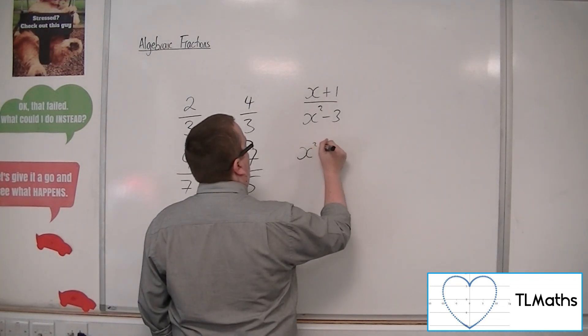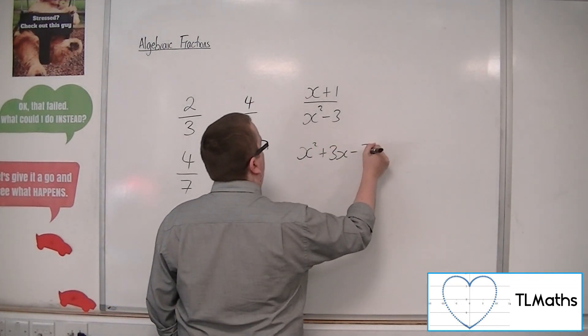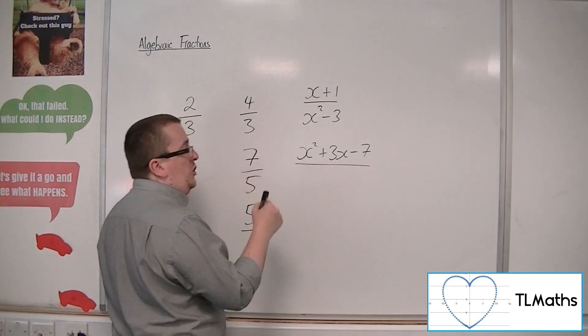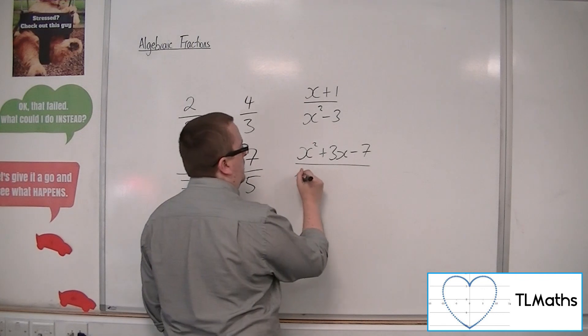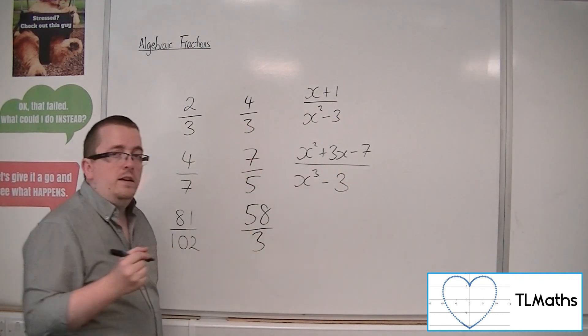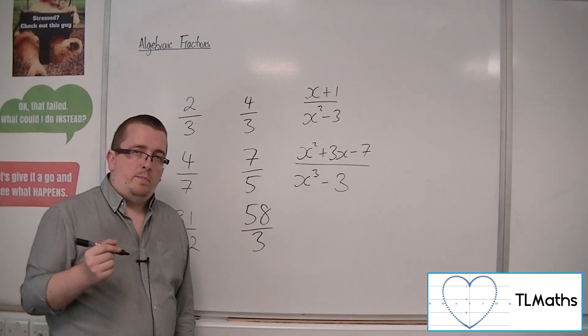I could have x² + 3x - 7 in the numerator, and as long as I've got an x³ or higher in the denominator, then this will remain a proper fraction.